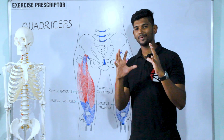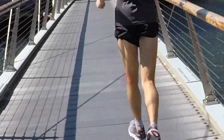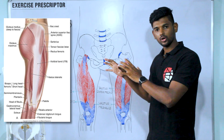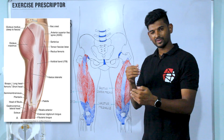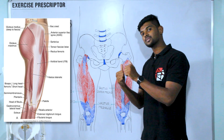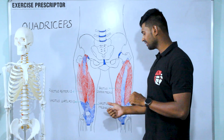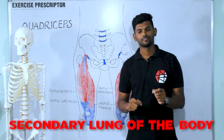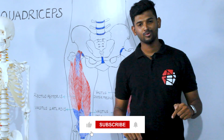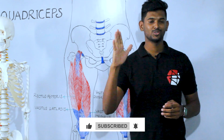Third point: IT band syndrome is often misdiagnosed by clinicians, because vastus lateralis is one of the largest muscles in the quadriceps group and presents next to the IT band. Tightness in the vastus lateralis muscle is often misdiagnosed as IT band syndrome. Before ending this video — the quadriceps muscle is also called the 'secondary lung' of the body; if you know the answer, comment below. Don't forget to like and subscribe. Happy learning — see you in the next video.